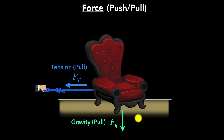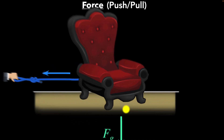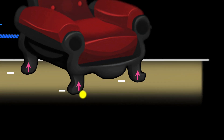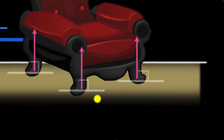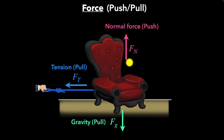What else? Because of gravity, the chair is being pushed into the floor, and as a result the floor is going to push back up on the chair. This force is perpendicular — or normal — to the surface, so we call it the normal force. It's a pushing force.